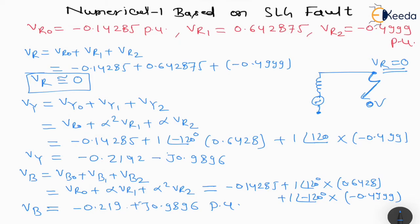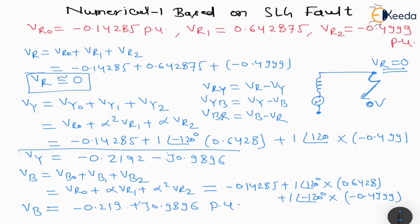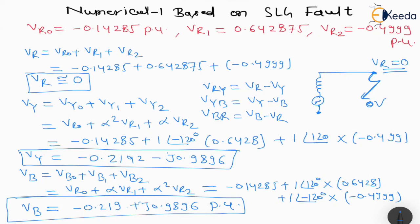Now we have calculated the values of Vr, Vy, and Vb. If we want the line voltages: Vry = Vr - Vy, Vyb = Vy - Vb, and Vbr = Vb - Vr. So this is how we solved the complete SLG fault numerical. Thank you.